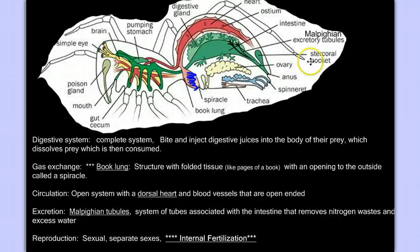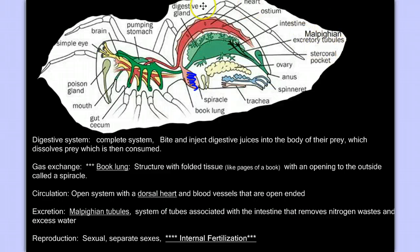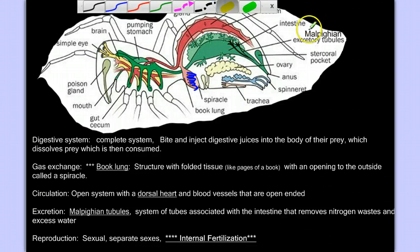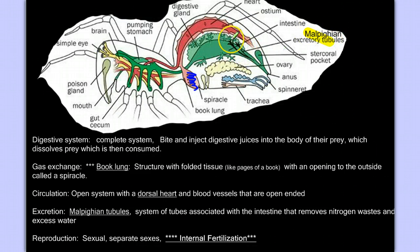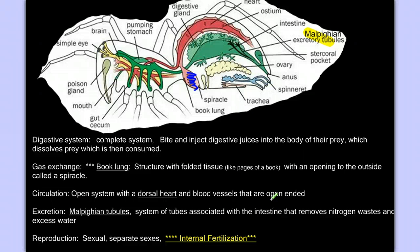I want to point out the malpighian tubules, which are the excretory organ — the corollary of the green gland in crustacea and, of course, the corollary of kidneys in our anatomy. The malpighian tubules draw out those waste products to eliminate them from the body, getting rid of metabolic waste. I also want to note that spiders show internal fertilization, meaning the male gametes are placed inside the female's body — important for terrestrial animals since external fertilization usually requires water.